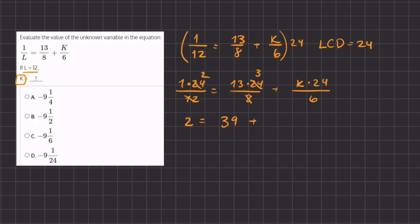And we have plus k times 24 divided by 6. We can again simplify the 6 and 24 to 4. So now we have 4 times k, which gives us 4k.